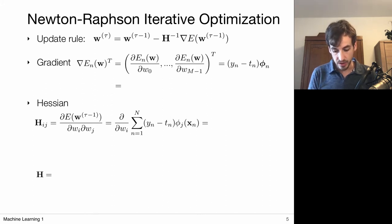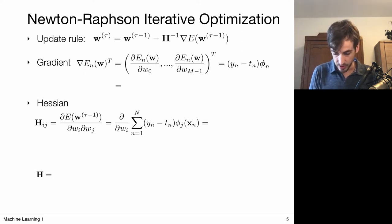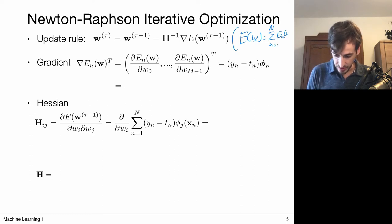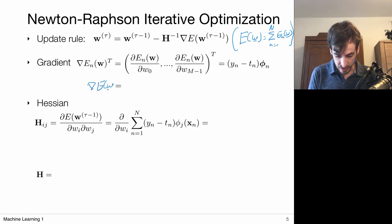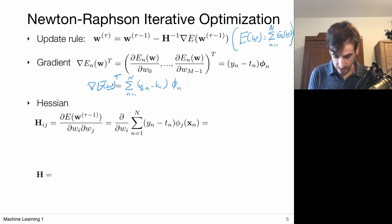For the gradient: if the total error E(w) is the sum over all its components (each denoted E_n), then the gradient vector is the sum over all data points of (y_n minus t_n) times phi_n. In matrix-vector notation this is the design matrix transpose times the prediction vector minus the target vector. The design matrix is of size N by M — N data points, each with an M-dimensional feature vector stacked as rows.